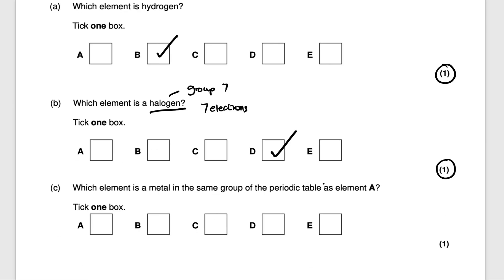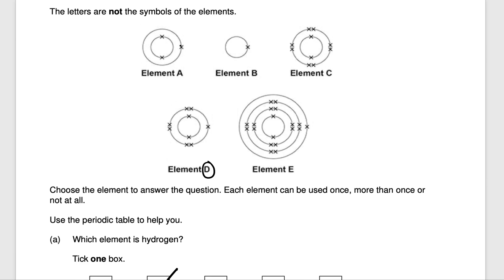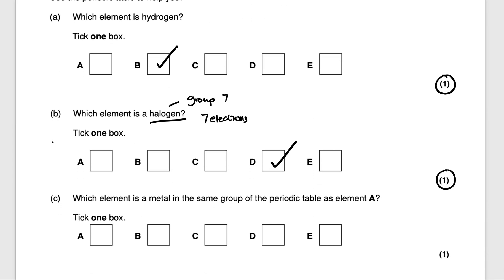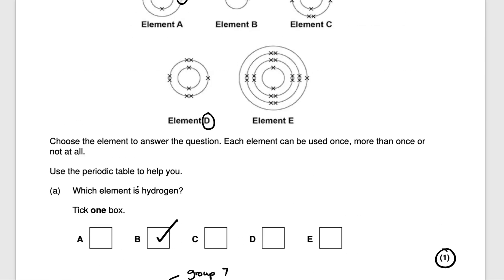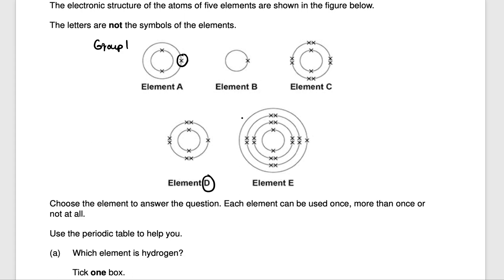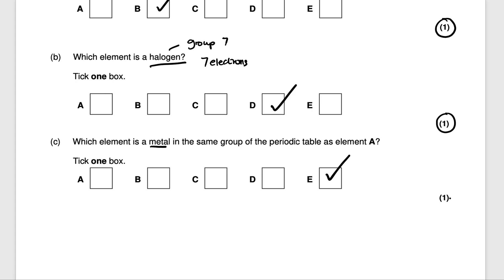The next question says which element is a metal in the same group of the periodic table as element A. Element A has one electron in its outer shell, so that tells us it is in group 1. Which other element has one electron in its outer shell and is a metal? We know that element B is hydrogen, and hydrogen is not a metal, so we can rule out element B. The other element that is a metal and has one electron in its outer shell is element E. So the answer is element E for one mark.